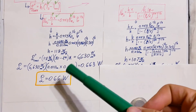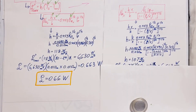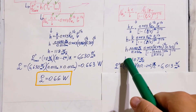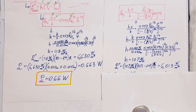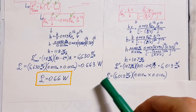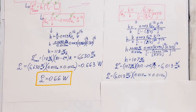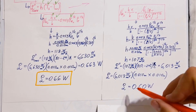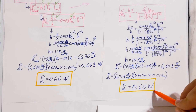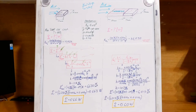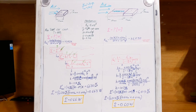Now we solve for flux just as before, plugging in H = 107 and our temperatures to get a flux of 6013. Then for Q, the area stays the same at 10 millimeters by 10 millimeters — the same chip area as in scenario 1. We find a power of 0.60 watts for the second scenario.